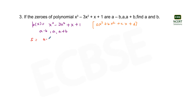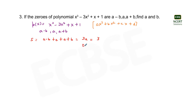The sum of the three zeros is (a - b) + a + (a + b), which equals 3a. This is equal to minus b by a, where the coefficient b is -3 and a is 1, so minus b by a equals 3. Therefore, 3a = 3, giving us a = 1.